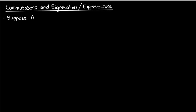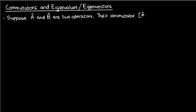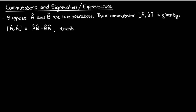Suppose I had two operators a-hat and b-hat. Their commutator, which is denoted by putting a-hat and b-hat in square brackets, is defined as a-hat b-hat minus b-hat a-hat. Intuitively you can think of a commutator as a quantity which tells you the extent to which a-hat and b-hat commute.